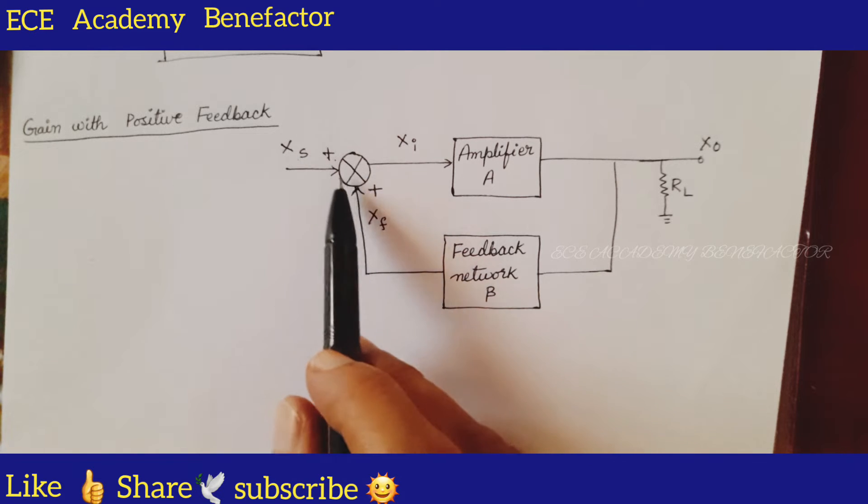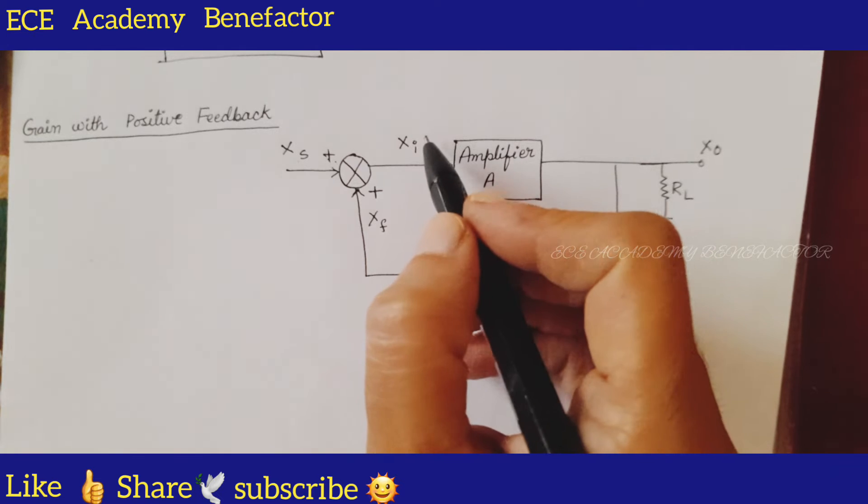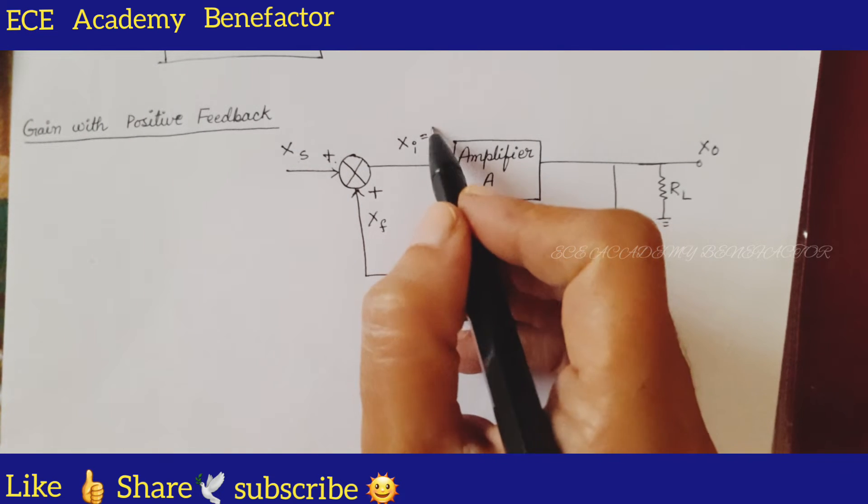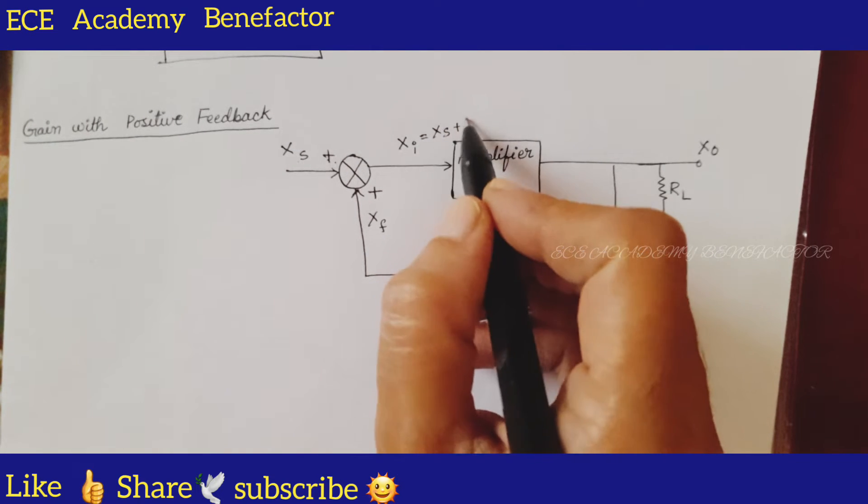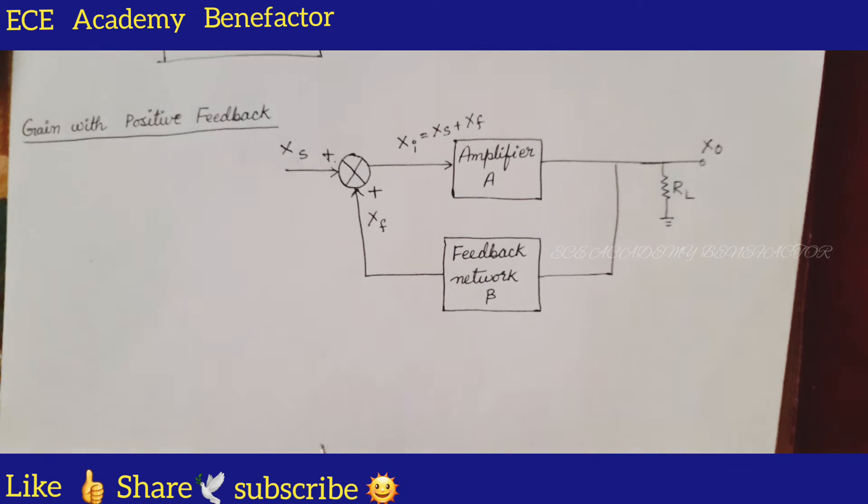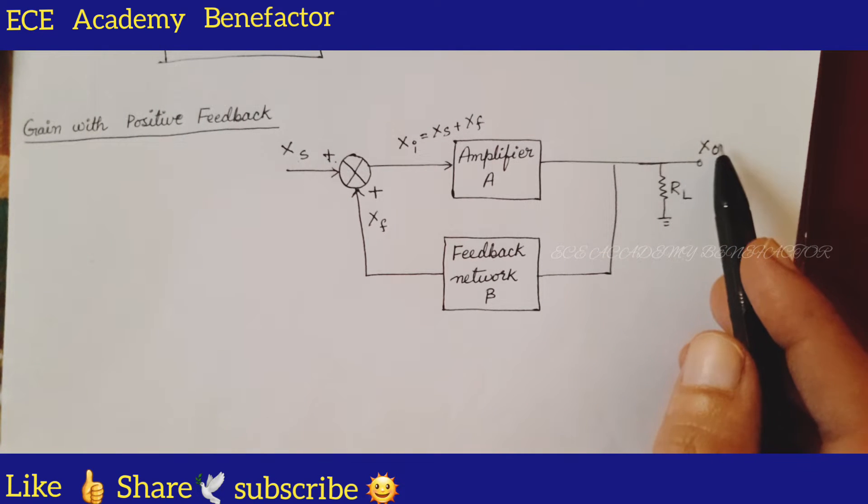This is a mixer where they are mixed. What is Xi equal to? Xi is equal to Xs plus Xf. Xo is the output signal.